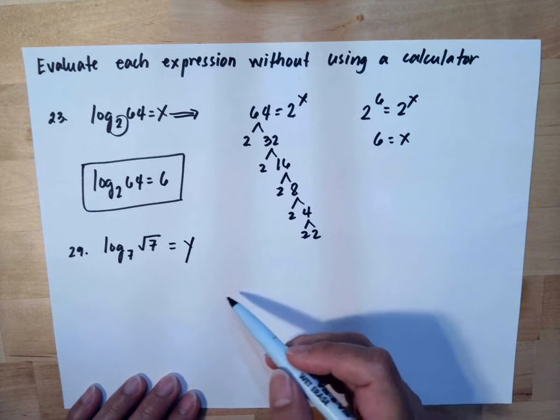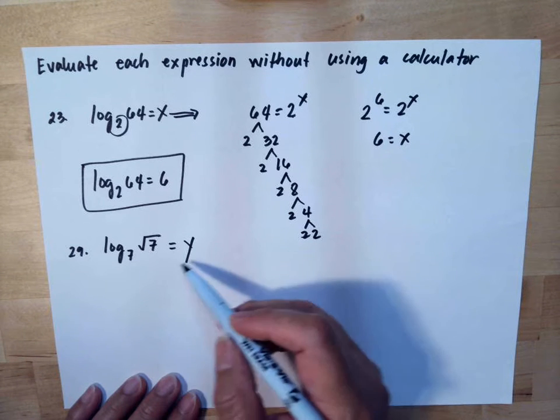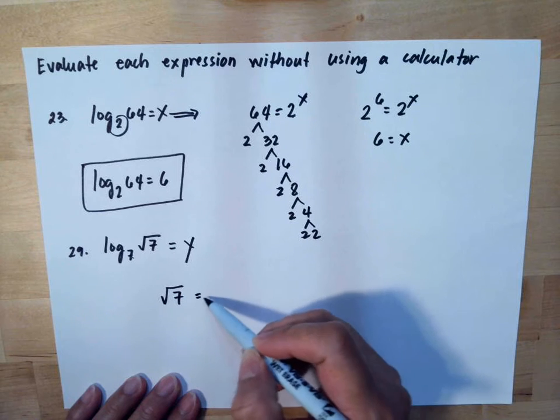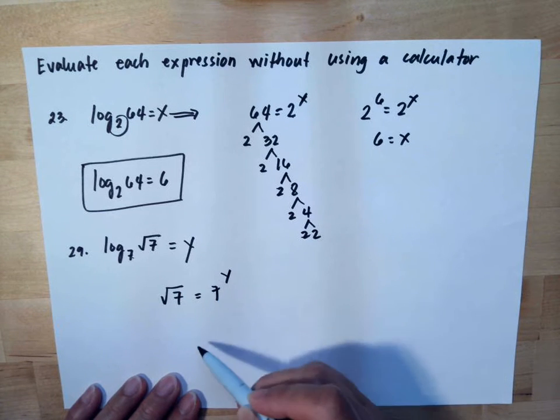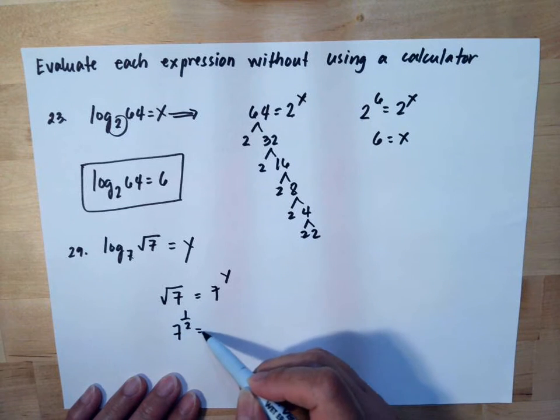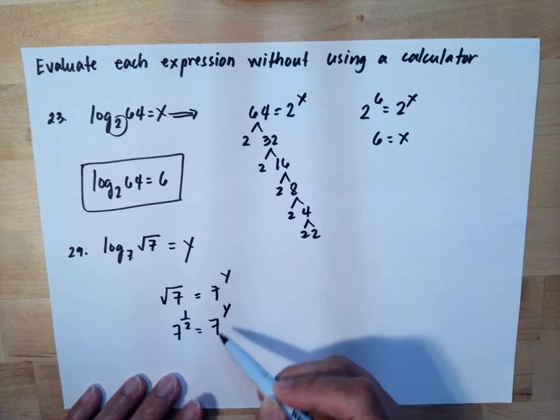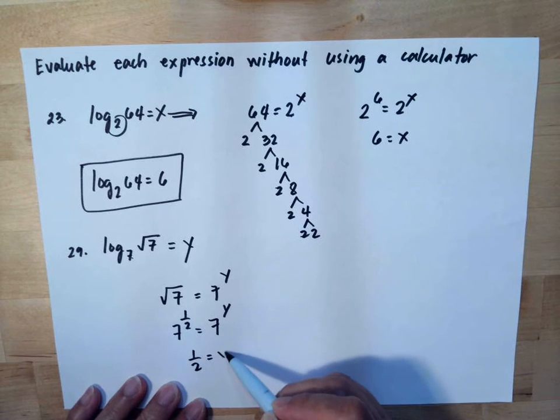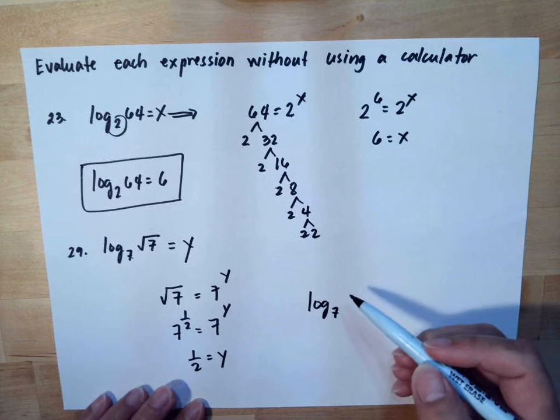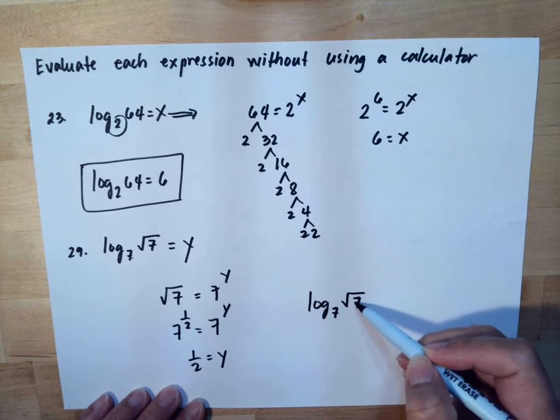And here, let's say it's equal to y. So our exponent is y and the base is 7, so we have square root of 7 equals 7 to the y. Then the square root is one-half, so we have one-half equals y. So log base 7 of square root of 7 equals one-half.